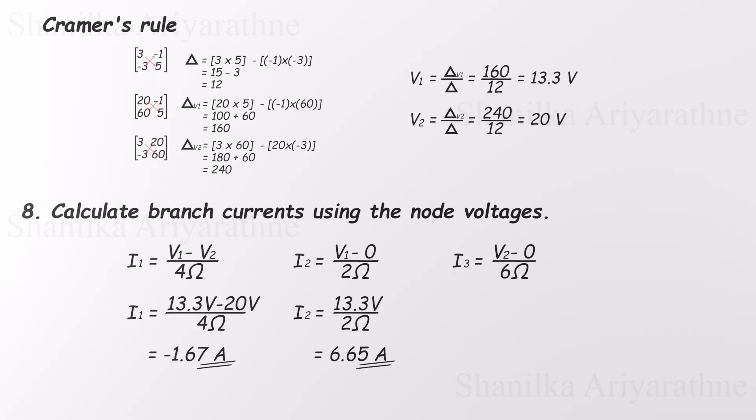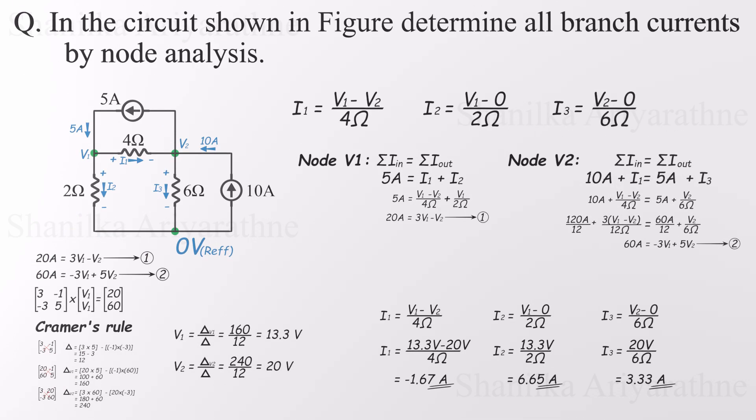Next, I2 comes out to 6.65 amps, so our guess direction was correct. And for I3, we get 3.33 amps, also flowing as expected. And that's it. We've successfully solved the entire problem using nodal analysis.